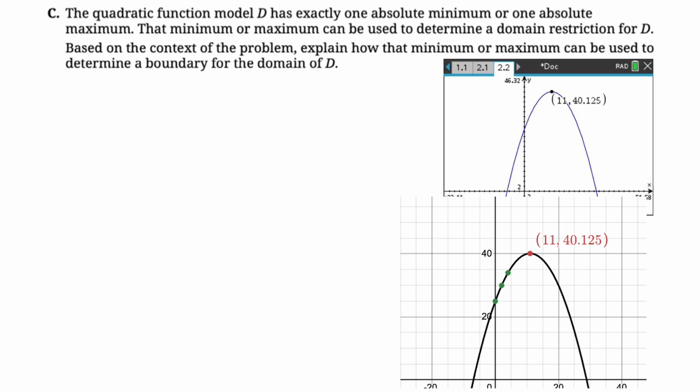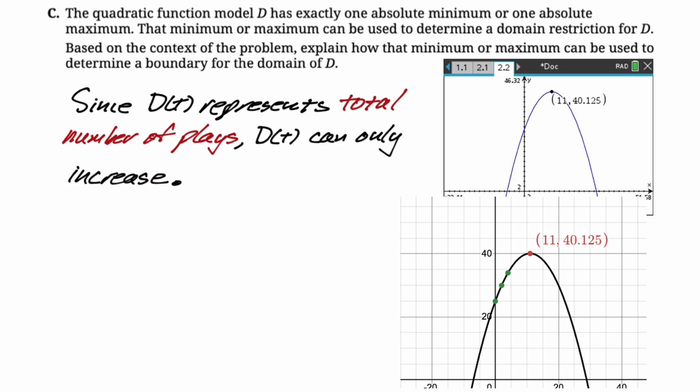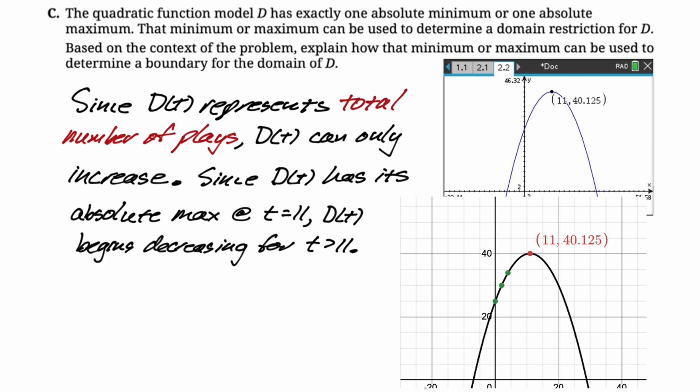Now, if you remember the table of values was for the total number of plays since launch or something like that. If you think about it, total number of plays cannot decrease, right? No matter what happens, it's going to go up. Like it might go up less, but it's just going to keep going up. So we just kind of need to capture that idea. So since D of T represents the total number of plays, D of T can only increase. Now let's bring this absolute maximum idea into this. Since D of T has its absolute maximum at T equals 11, we know that D of T will begin decreasing when T is greater than 11. And we just said that it can only increase. The number of total plays can only increase, which means we just have to stop at 11. The domain of D of T that could only be valid would be from zero to 11, which I think answers the question. That's the entire thing. I hope this was helpful and good luck.